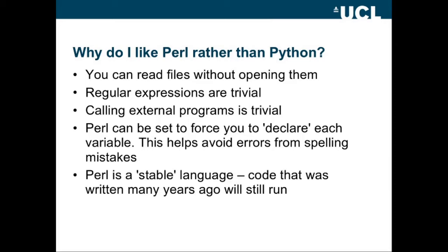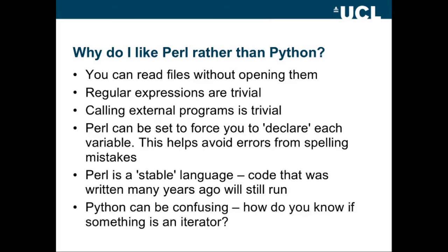Perl is a stable language. Code that was written many, many years ago will still run, whereas, of course, the big change from Python 2 to Python 3 means that's not the case. And I often find when I'm trying to run older pieces of Python, even with the right Python version, it still won't run properly. Python can be confusing. How do you know if something is an iterator? In other words, whether you can just step through it by saying for A in B. Do you know if B is an iterator or not?